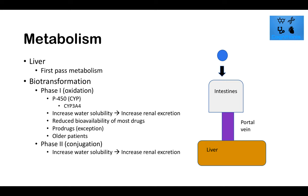Phase II is the conjugation phase. We add on methyl groups (methylation), acetyl groups (acetylation), sulfide groups, or glucuronide groups. Again, the goal is increased water solubility and increased renal excretion. Most of the time, we are inactivating the drug when we go through Phase II.